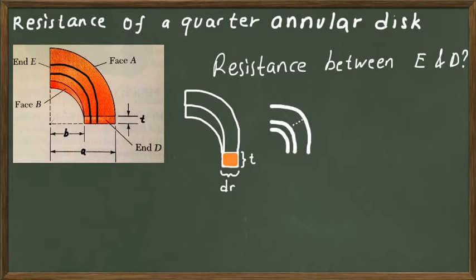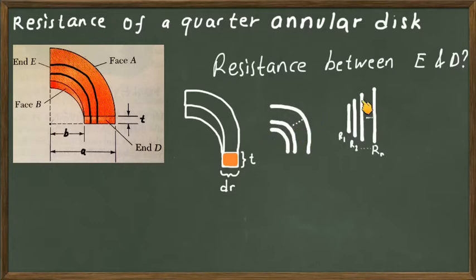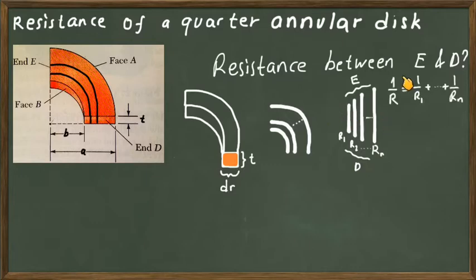We can think of these rings as parallelly connected resistances. To find the equivalent resistance, we use the expression for parallel addition. These resistors have different lengths since they have all different radii, and they are connected in parallel from D to E. The inverse of the equivalent resistance equals the sum of all inverse resistances.